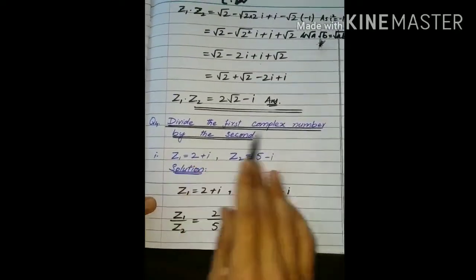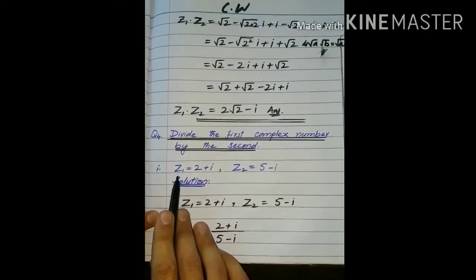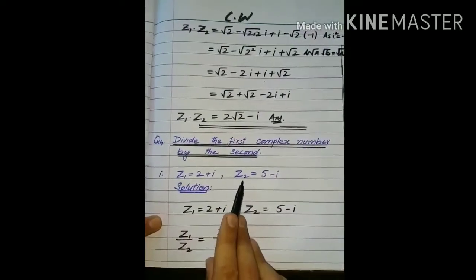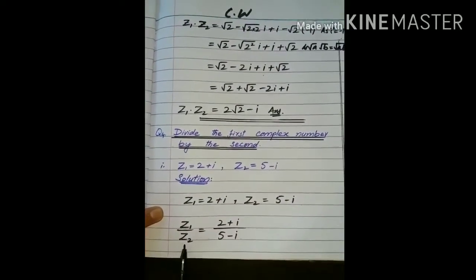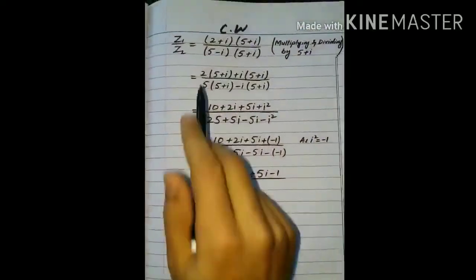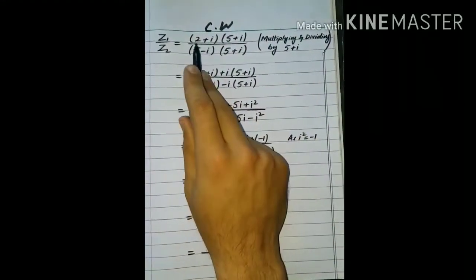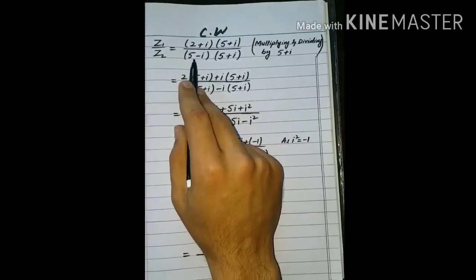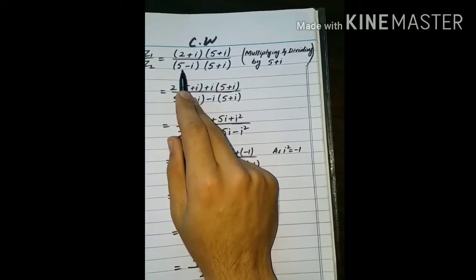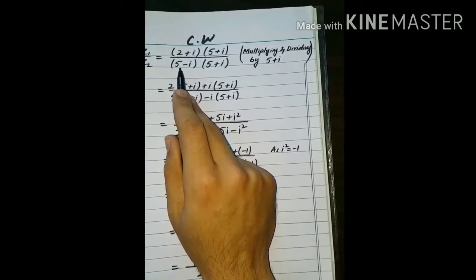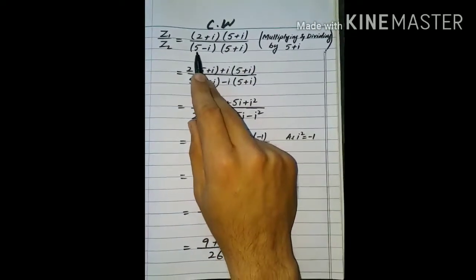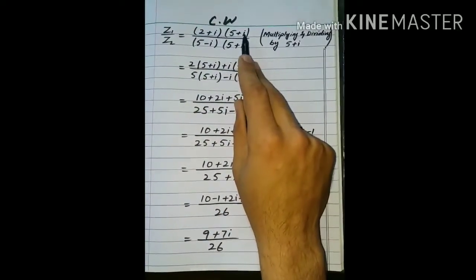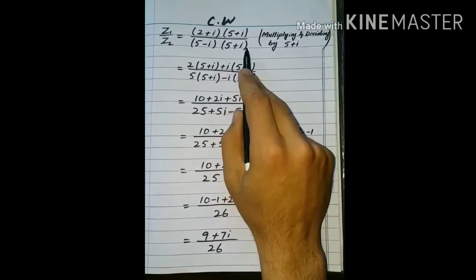Next question: divide the first complex number by second۔ ہمیں دو complex numbers Z1 اور Z2 دیئے گئے ہیں۔ Z1 کو Z2 سے divide کرنا ہے تو Z1 divided by Z2 آجائے گا۔ تو 2 plus iota divided by 5 minus iota آگیا ہے۔ divide کرنا ہے تو ہم نے اس کے conjugate 5 plus iota سے multiply اور divide کیا — تو numerator اور denominator دونوں میں 5 plus iota آجائے گا۔